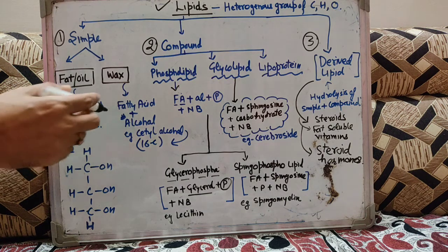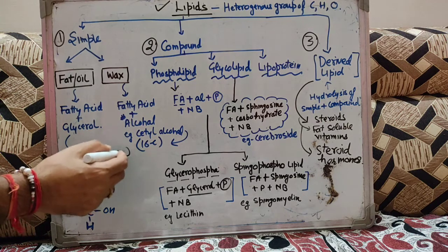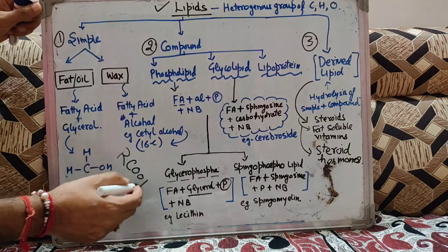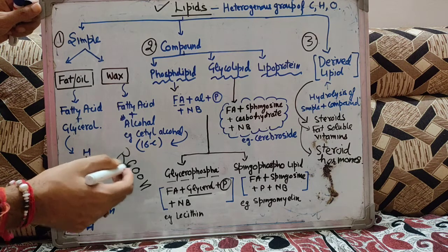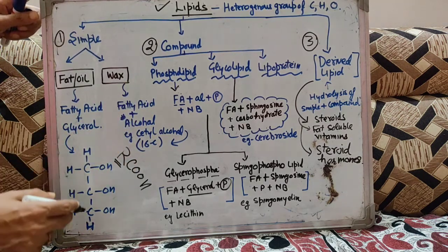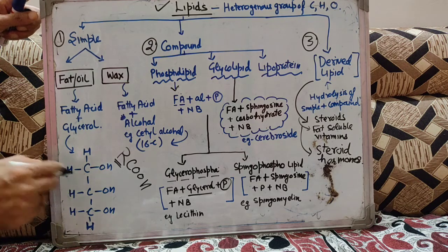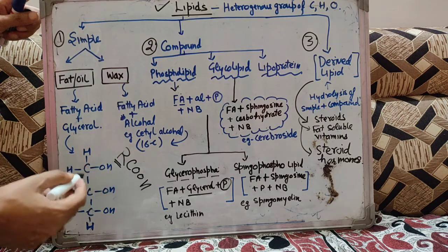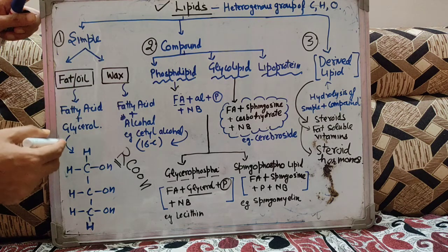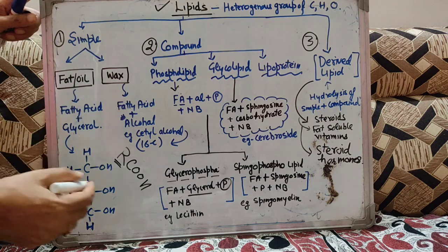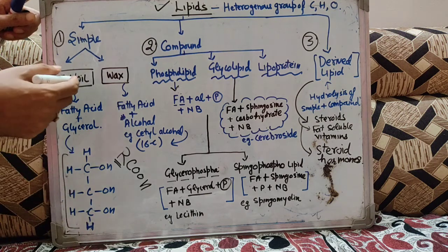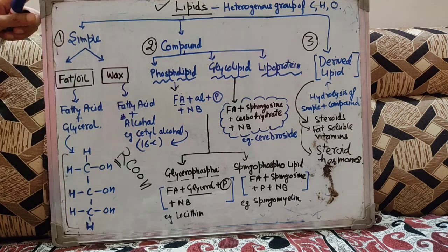Fatty acid का common formula लिखते हैं R-COOH, जहाँ R could be a number of carbon atoms में vary कर सकती है. Glycerol जो है trihydroxy propane है — glycerol का formula trihydroxy propane. So fat and oil, they are having fatty acid and glycerol — fatty acid और glycerol से मिल करके बने होते हैं fat and oil, जो simple lipid की type है.